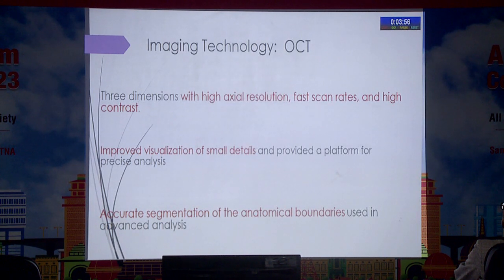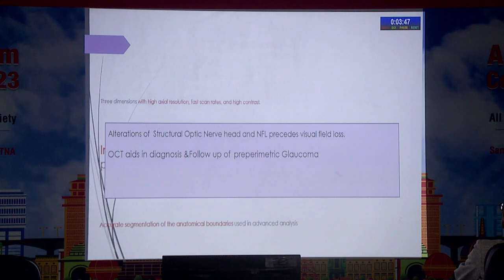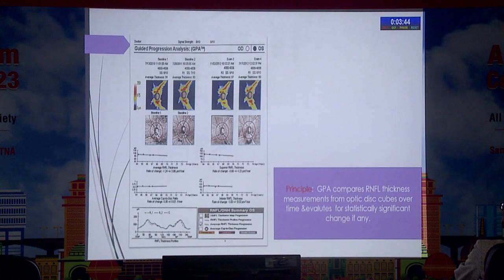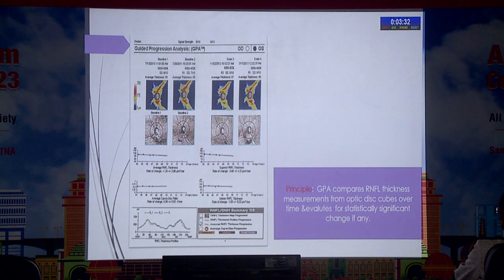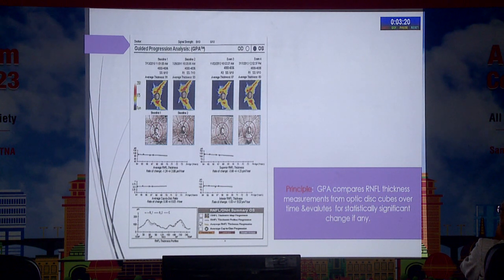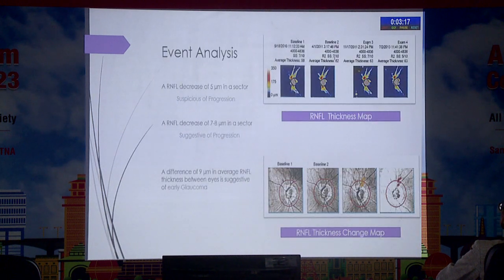Let's talk about the revolutionary change in glaucoma diagnostic armamentarium — OCT. Because of faster scan rates and accurate segmentation of anatomical boundaries, it gives improved visualization of smaller details. Progression can be detected in the form of GPA, that's Guided Progression Analysis. This is a typical printout the machine gives when assessing progression, where the optic disc cube data is used to compare RNFL thickness measurements over time, signified by colors if there is any statistically significant change.